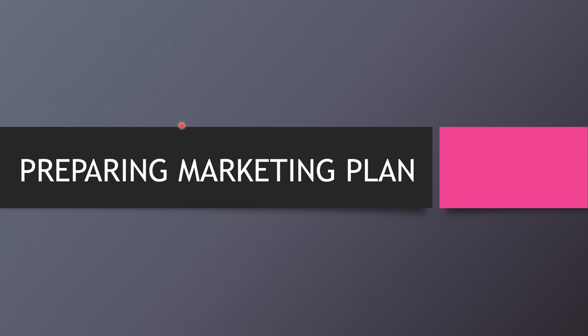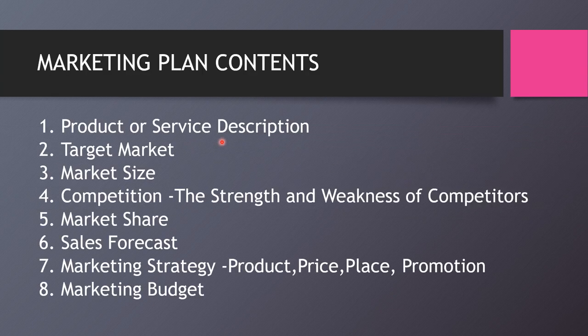In this video I'm going to explain Chapter 8 or Module 8 of ENT 300. As mentioned in the previous video on Chapter 7, you are required to prepare a business plan for your group assignment. The first thing you need to prepare is the marketing plan. When you outline your marketing plan, it must consist of eight items.